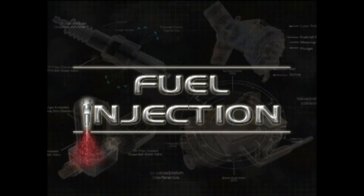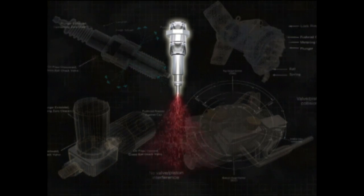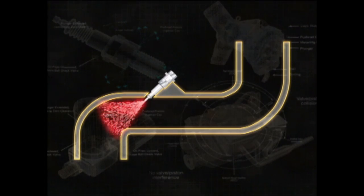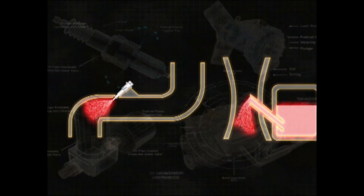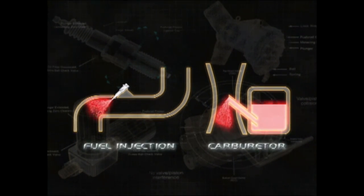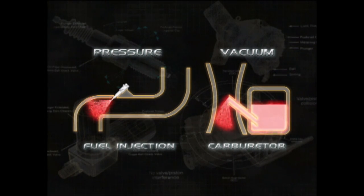Fuel injection has wiped out the use of carburetors on new cars and trucks over the last 20 years, because it's much more efficient and meets government emission requirements. A fuel injection system uses a fuel pump to pressurize fuel and then inject it into the air intake of an engine. The fuel is then atomized as it mixes with the air stream. It performs the same function as a carburetor, except pressure — not vacuum — is used to introduce the fuel, making fuel injection more efficient at atomizing fuel.